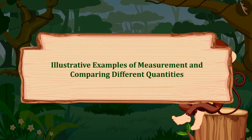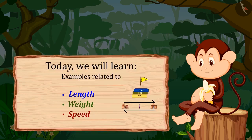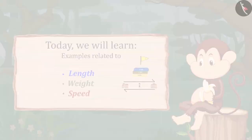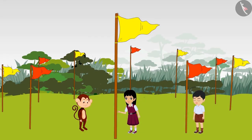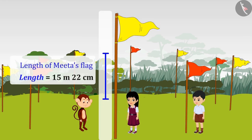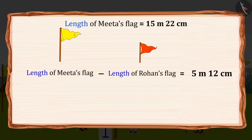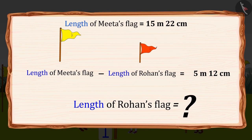Measurement and Comparing Different Quantities. Some flags have been put along the boundary of the ground. This flag is 15m and 22cm long. The flag near me is 5m and 12cm shorter than your flag. Can you tell how long is my flag?